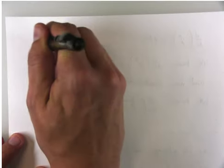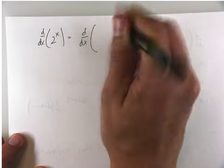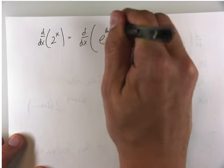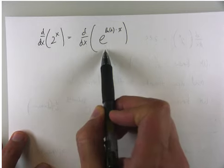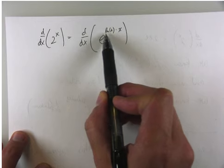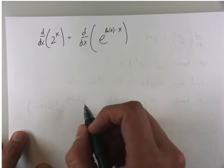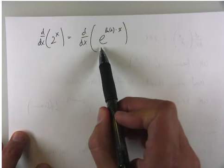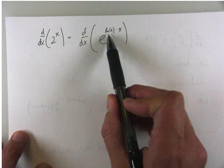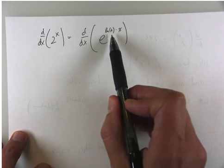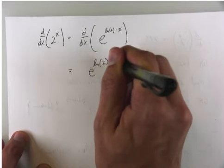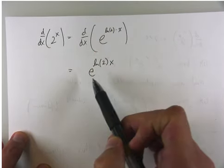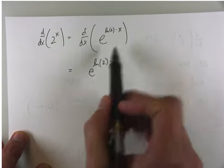Now I'm in a place where I want to take a derivative. The derivative of 2 to the x is really the derivative of e to the natural log of 2 times x. I like this because it's base e and I know how to take those derivatives. So: 2 to the x is really e to the natural log of 2 times x. That derivative is going to be e to the natural log of 2 times x — it won't change — but then I need to multiply by the derivative of that exponent. What is the derivative of the natural log of 2 times x?